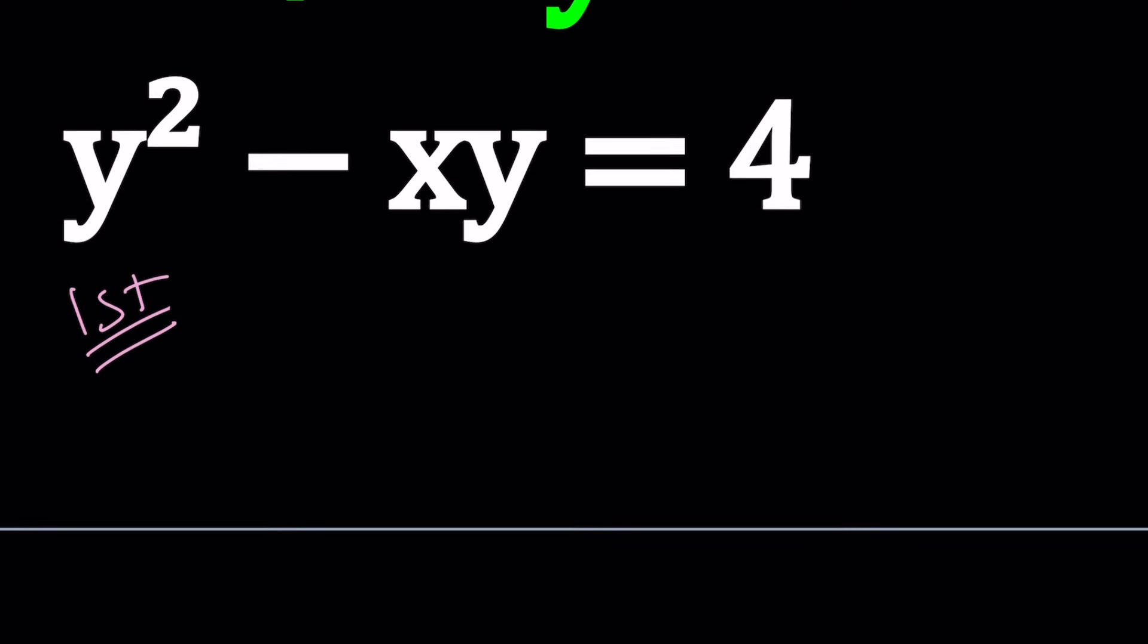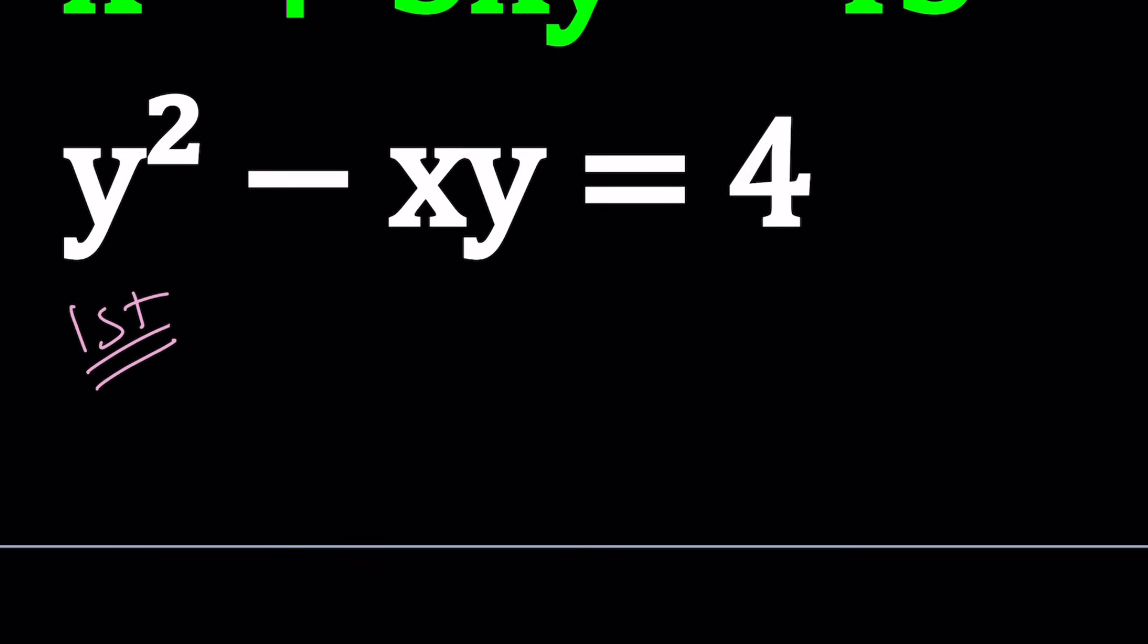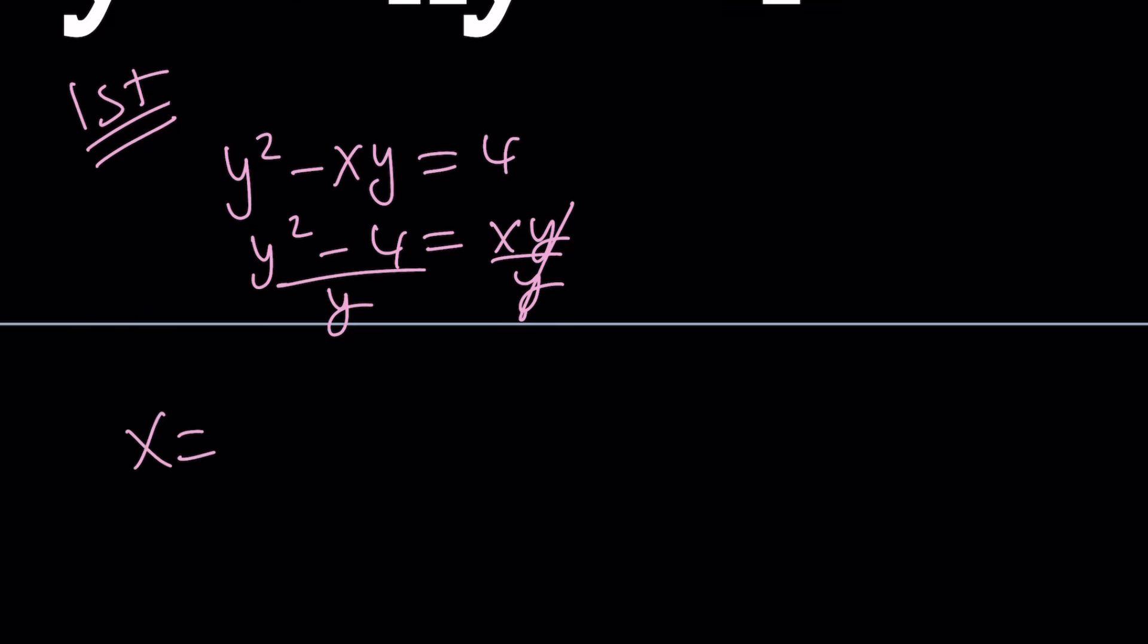So for my first method, I want to isolate one of the variables. I'll work with the second equation. Let's go ahead and isolate x from here. You can switch these around and then divide both sides by y, and that's going to give you x by itself. So x can be written as y squared minus 4 divided by y.